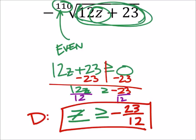Then I'm going to get the square root of zero, because that's where they're equal. The negative 23 twelfths would make the radicand zero, which is okay.